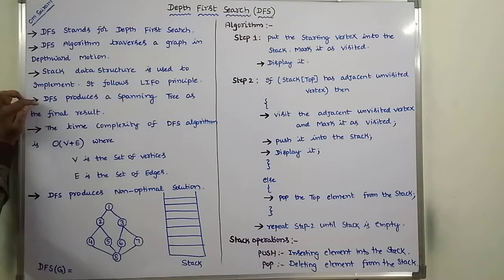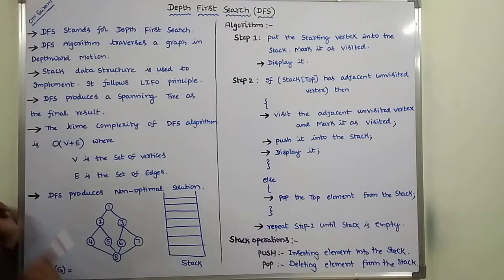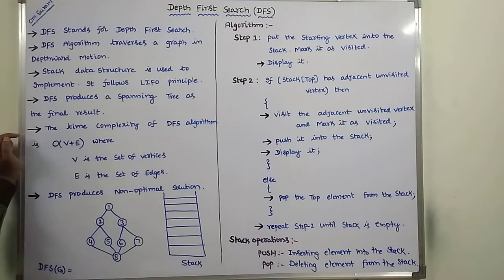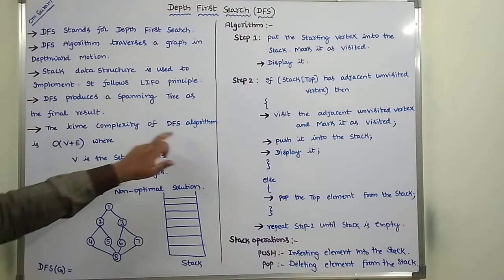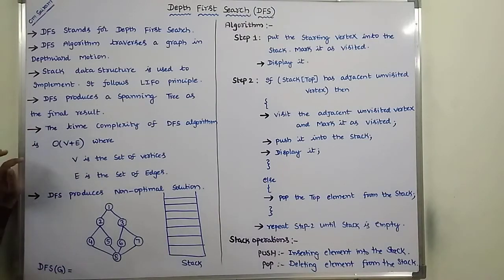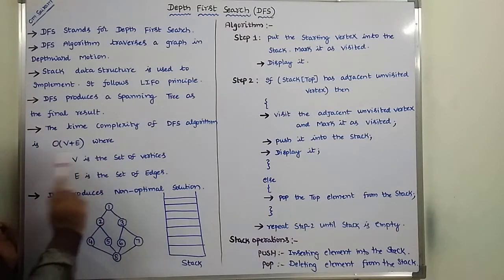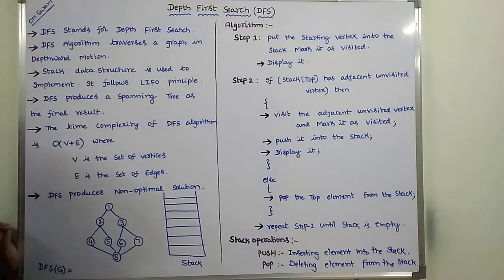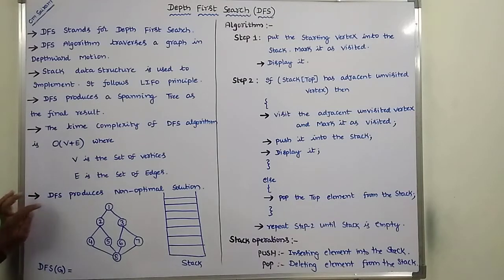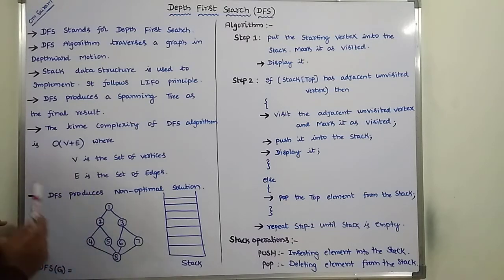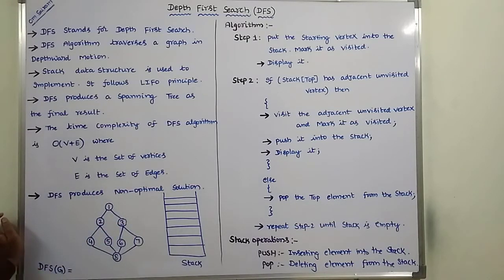DFS produces a spanning tree as the final result — a depth first spanning tree, which contains all the vertices. The time complexity of DFS algorithm is O(V + E), where V is the set of vertices and E is the set of edges. DFS produces a non-optimal solution, since we may get several DFS orderings for the same graph. Whereas BFS produces an optimal solution.